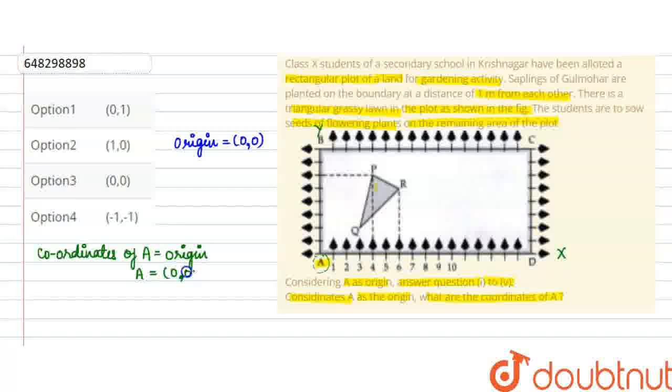तो हमारे A के coordinates हो जाएंगे 0 and 0. This is the answer. Question में कहा गया था A के coordinates find out करने के लिए और option number 3 is the correct answer of the given question. Thank you.